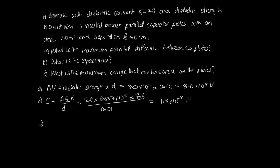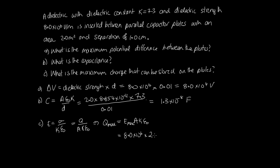Part C: what is the maximum charge that can be stored on the plates? The electric field between capacitor plates is given by σ/ε₀, and with a dielectric we divide by κ, giving E = q/(Aκε₀). We know the maximum electric field is the dielectric strength, so q_max = E_max × A × κ × ε₀. Substituting: 8×10⁶ × 2 × 7.3 × 8.854×10⁻¹² gives 1.0×10⁻³ coulombs.